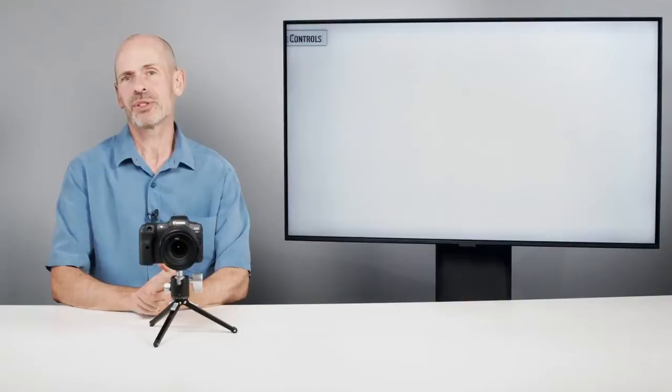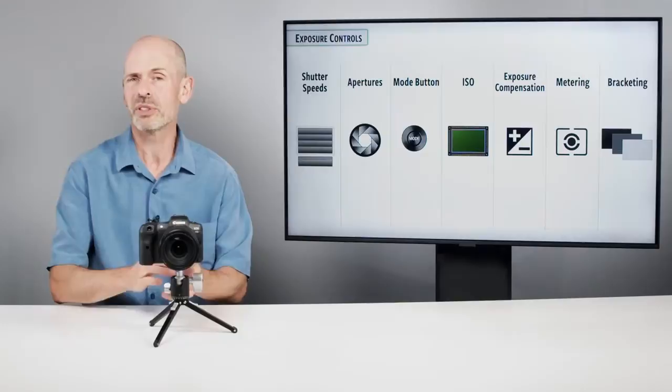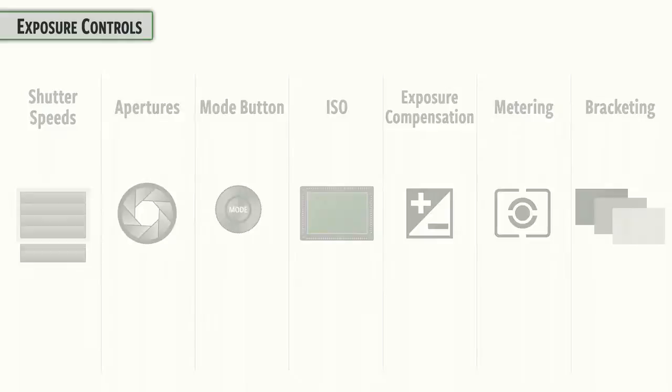Welcome to Exposure Controls. In this section, we are going to be going through all the ways that you can control the exposure on the camera — simple things like shutter speeds, apertures, ISOs — but we're also going to be looking at a variety of other tools and features in the camera in order to help get you the correct and best exposure in any situation.